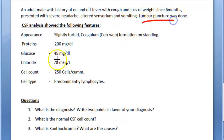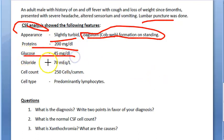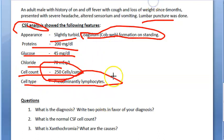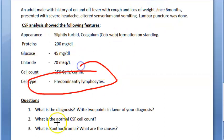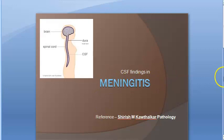The CSF analysis shows the appearance is turbid with cobweb formation on standing. Proteins are increased, glucose seems to be slightly less, chloride is okay, cell count is 250 — which is increased — and the cell type is predominantly lymphocytes. This is the major giveaway. Predominantly lymphocytes — go to the CSF presentation.